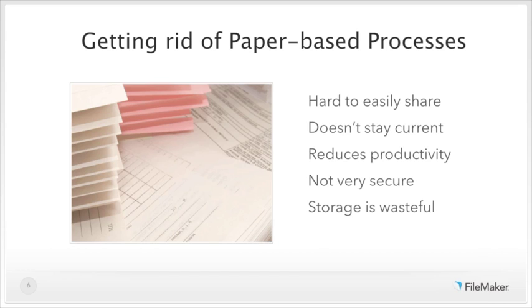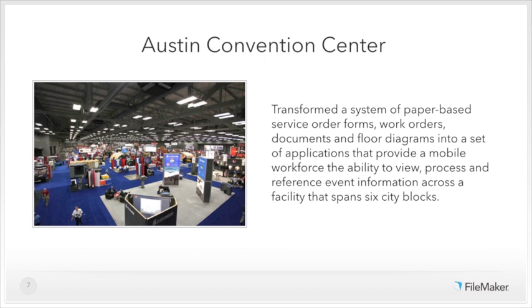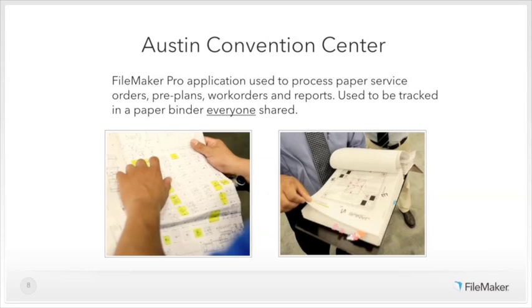Austin Convention Center transformed paper-based service order forms, work orders, and floor diagrams into a mobile application that provides a mobile workforce the ability to view, process, and reference event information across a facility spanning six city blocks. Before FileMaker Go, exhibitors' work orders were based solely on faxes and paper — orders were keyed into a system, printed out, and placed into a binder with diagrams and other paperwork to start deployment or fulfill changes. This was a very manual process.